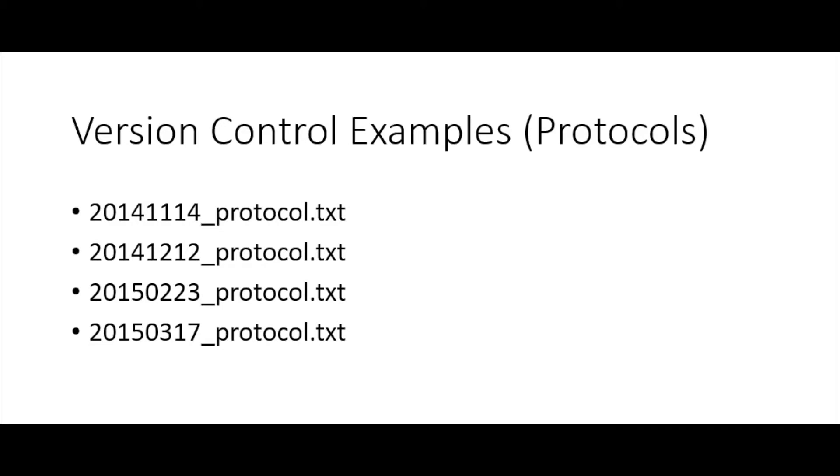Another way to do this is to use dates. For protocols this might be better than just using version numbers, because you can say on this date here's the protocol, then it changed on this date, and then I'm going to go back to this version of the protocol from this date. So basically just by renaming — adding a little extra information to your file names and periodically saving as you update to a new version — you can have a whole history, a snapshot of what you've done to this document over time. That can be really useful just to capture as much information as possible.